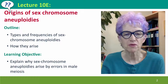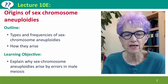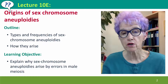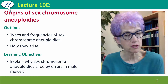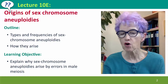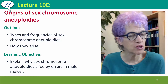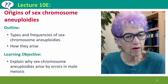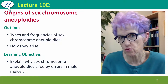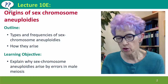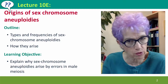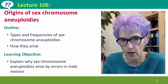Hi, everyone. Welcome to Lecture 10E of Useful Genetics, where we're going to talk about the origins of sex chromosome aneuploidies — that is, of individuals who have inappropriate numbers of the sex chromosomes, too many or too few of the X chromosome or the Y chromosome.